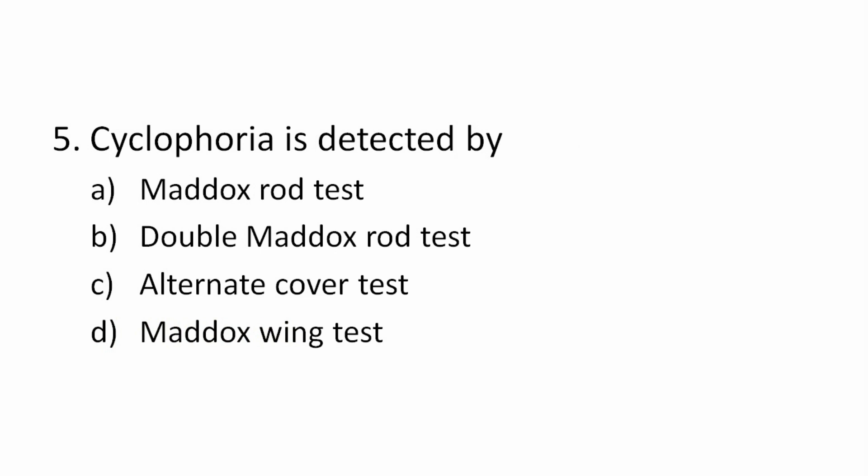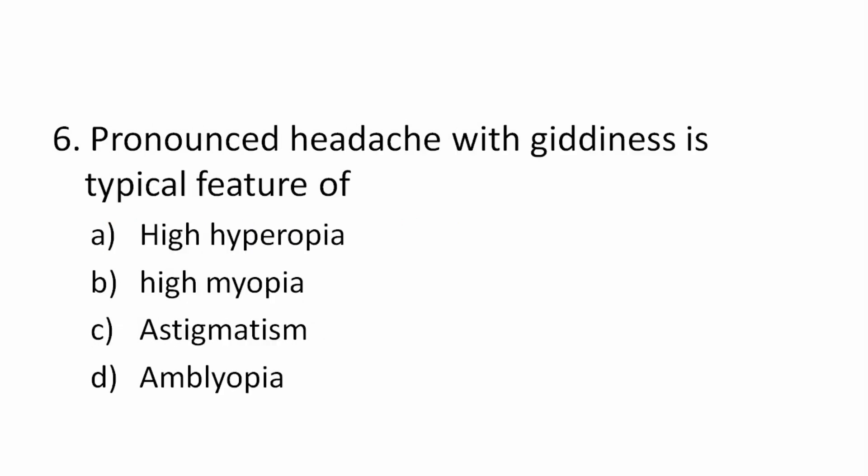Question 5: Cyclophoria is determined by which test? Options: Maddox rod test, double Maddox rod test, alternate cover test, Maddox wing test. The correct answer is the double Maddox rod test, which is used to detect and measure cyclophoria.